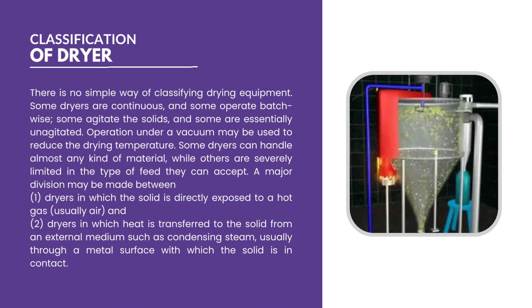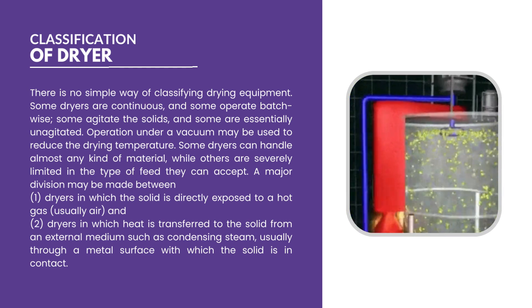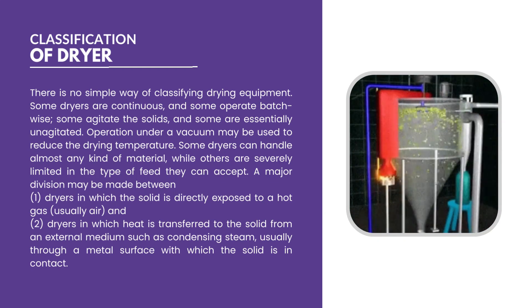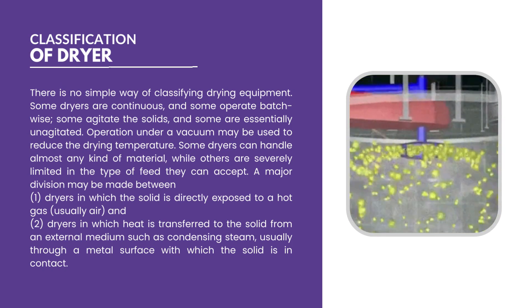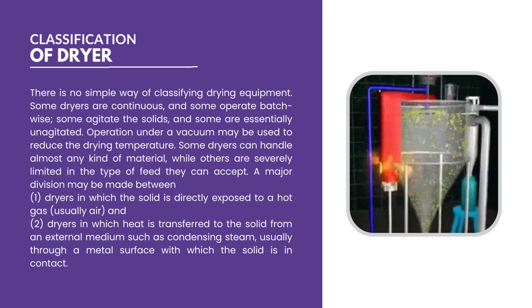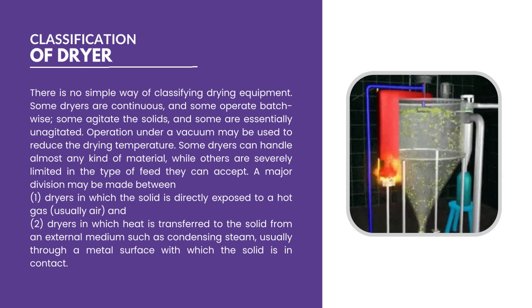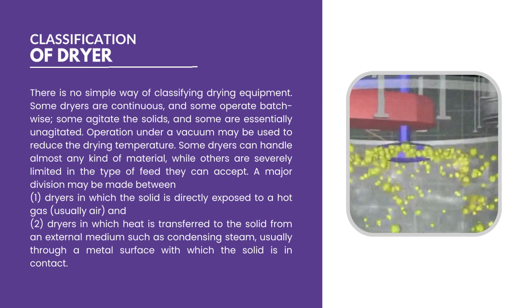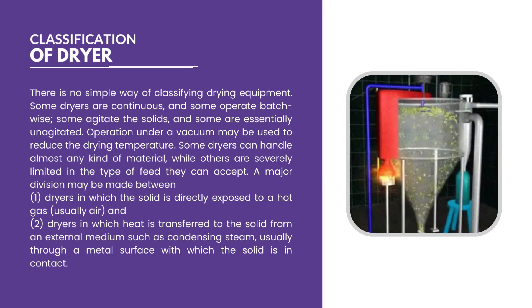Moving on, we will discuss the classification of dryers. It is not simple to classify drying equipment. Some dryers are continuous while others operate in a batch. A few involve agitation of solids whereas others remain unagitated. In some conditions, the drying operation is carried out under vacuum and the temperature is reduced. Some dryers can handle any kind of material while others are specific to the type of feed.